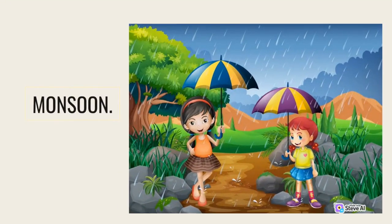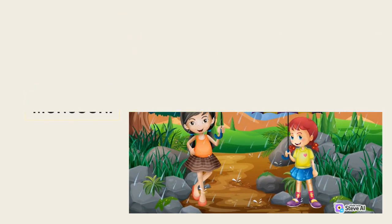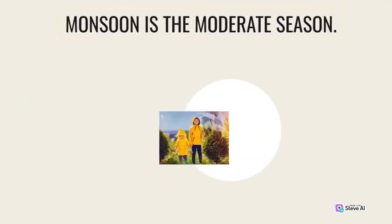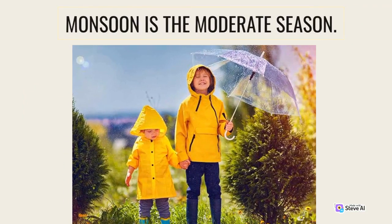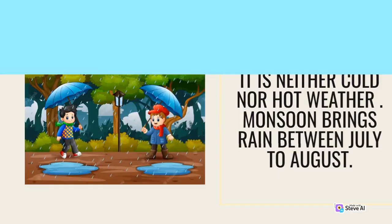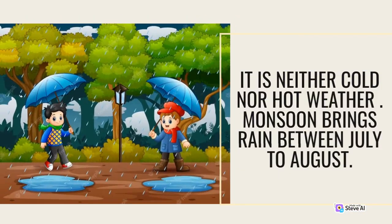Monsoon is a moderate season. It is neither cold nor hot weather. Monsoon brings rain between July and August.